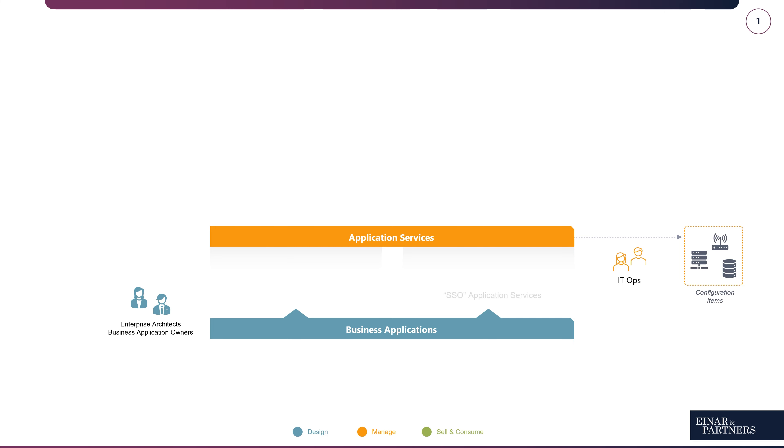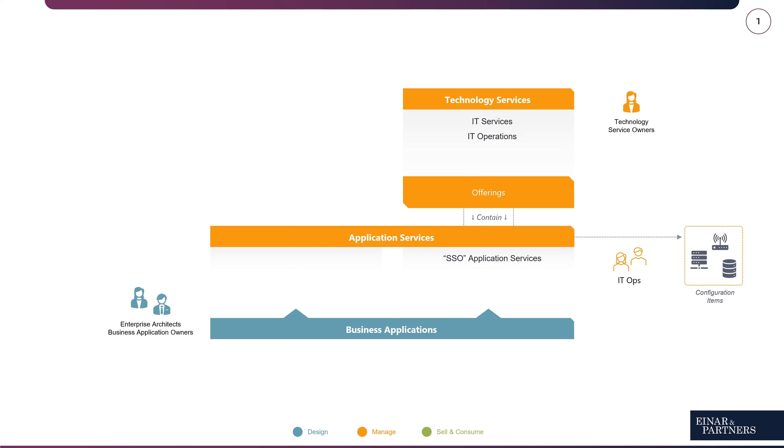We understand now that application services represent instances of applications in our organization. They transparently document, on one hand, the dependencies, but also the data flow. So let's take our example of the SSO service. The SSO service might be represented by an application service which connects to a technical service offering — here we document commitments such as availability. These are on the operational side.